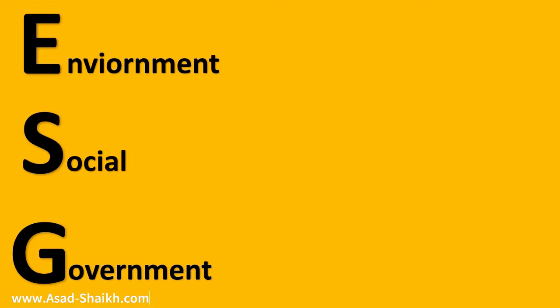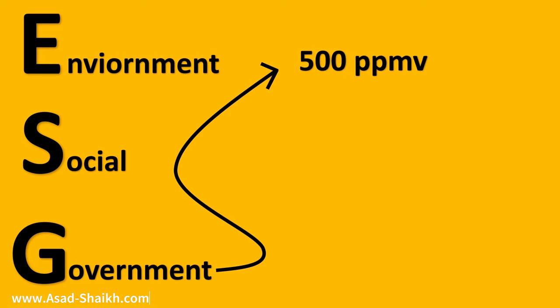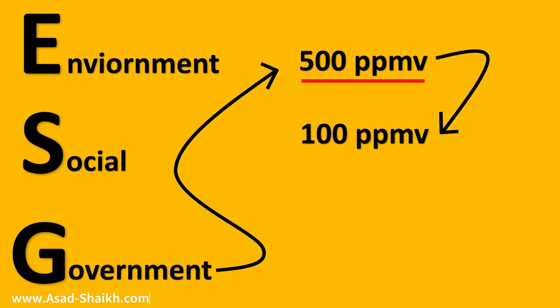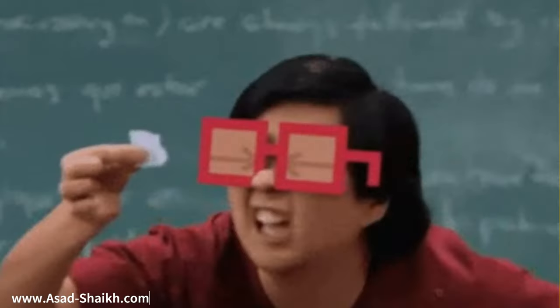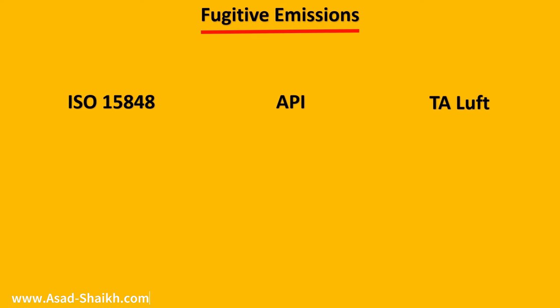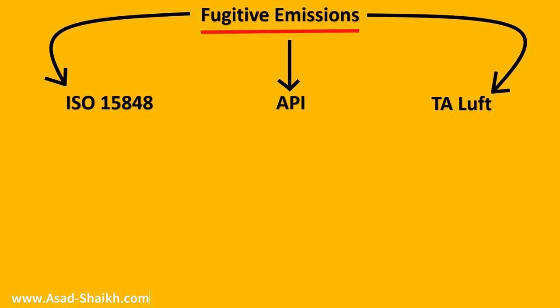You also have environmental, social, and government pressures coming in for industries. Government norms have become so strict that initially it used to be 500 parts per million in volume, then it became 100 ppmv, and now it is as stringent as 50 parts per million in volume, which is a very minuscule quantity. The fugitive emission standards used throughout the world are ISO 15848, API, and TALAFT standards in Germany.